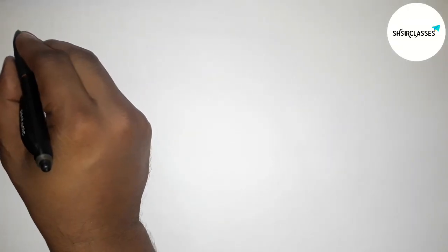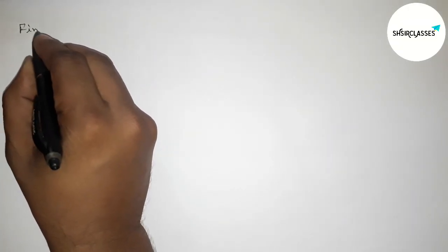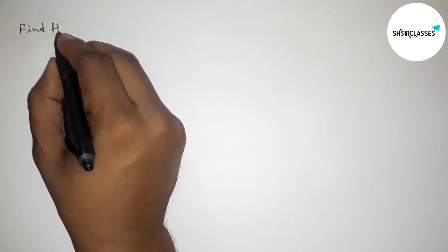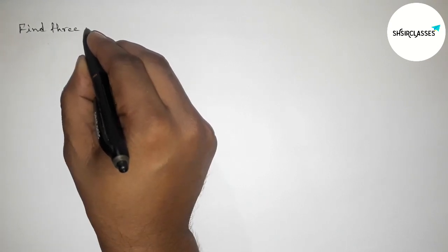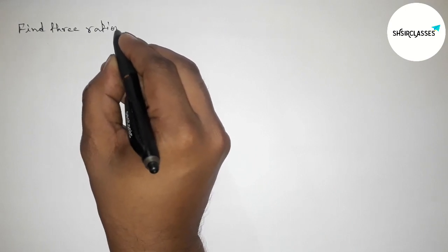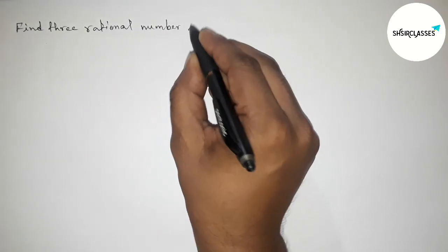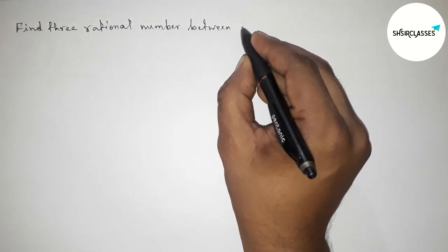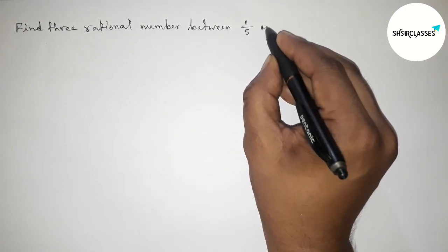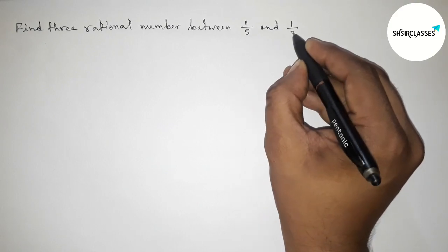Hi everyone, welcome to SI share classes. Today in this video we have to find three rational numbers between 1/5 and 1/3 in an easy way, so please watch the video till the end. Let's start the video.